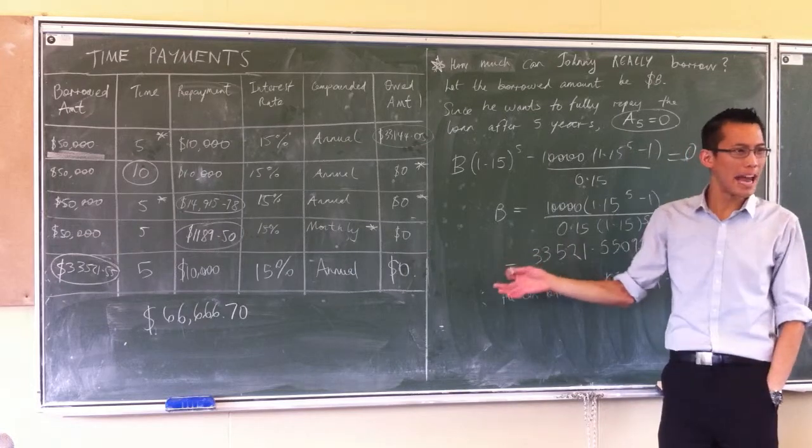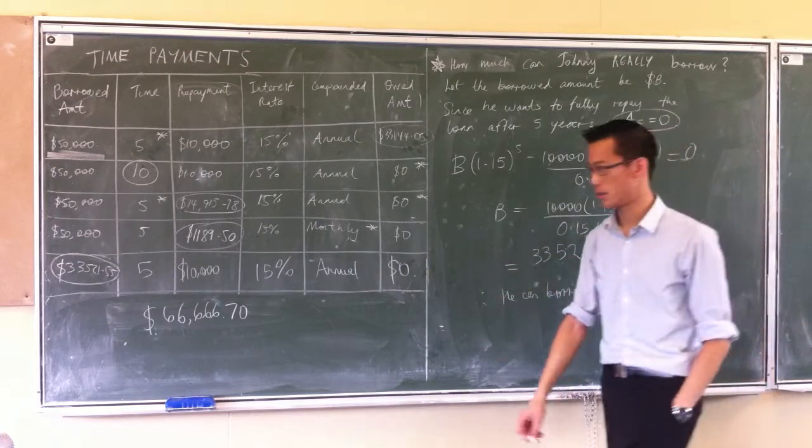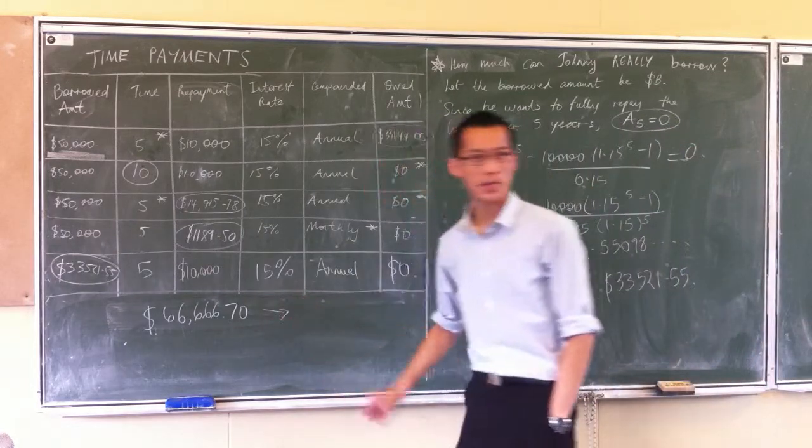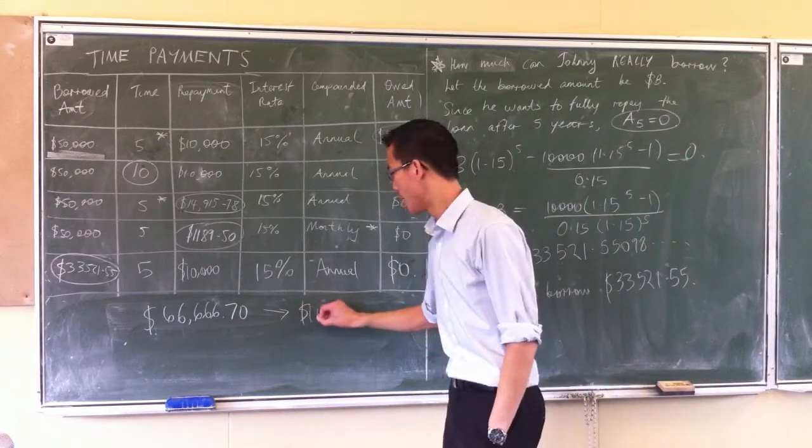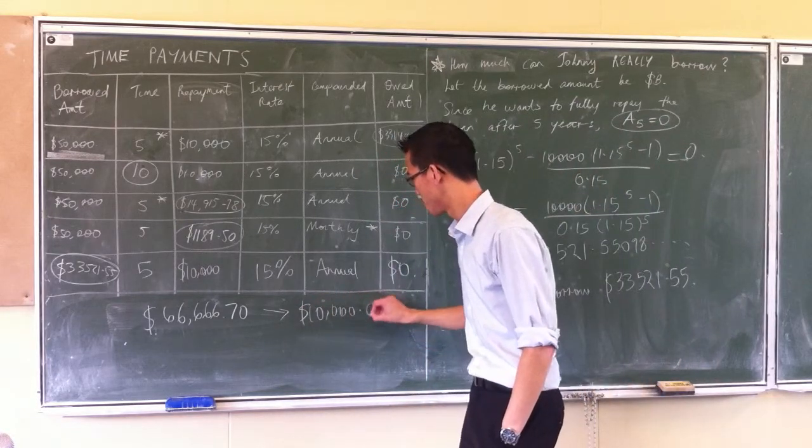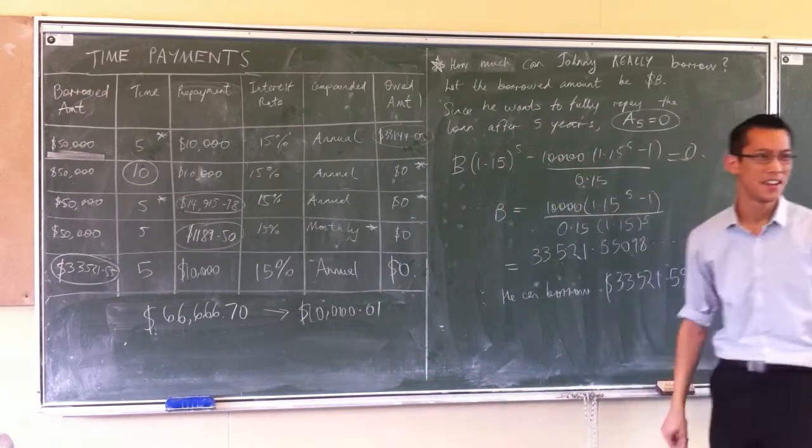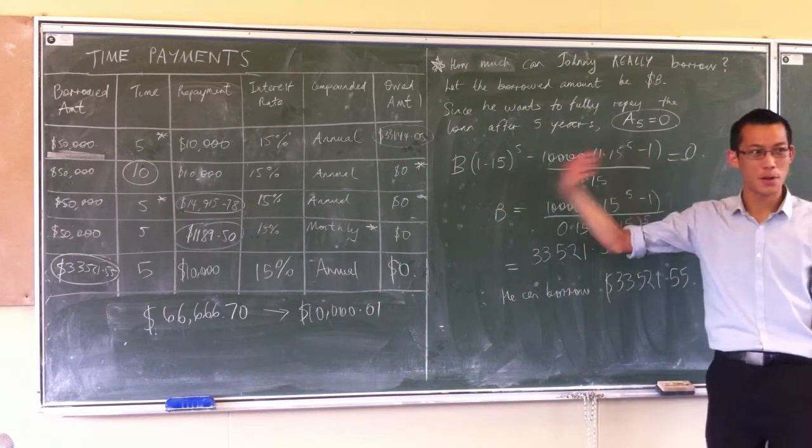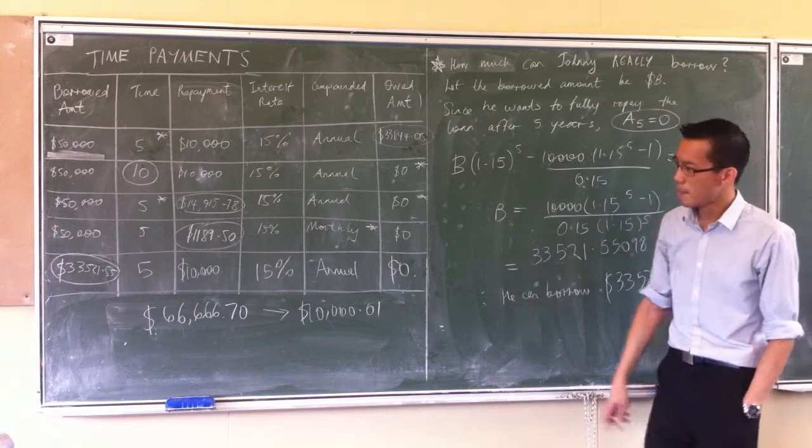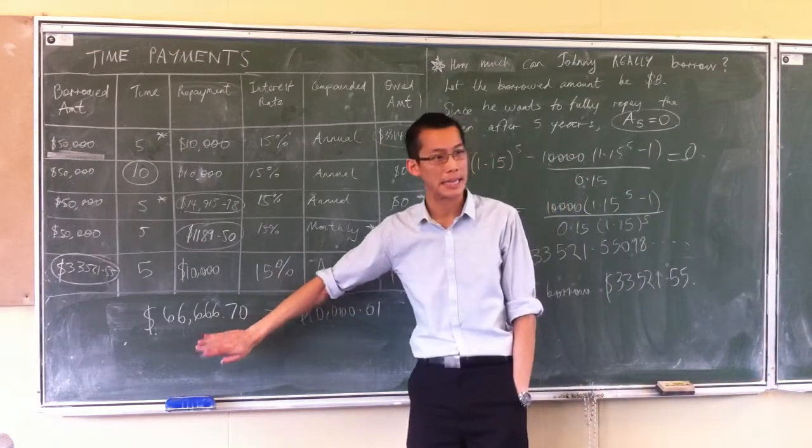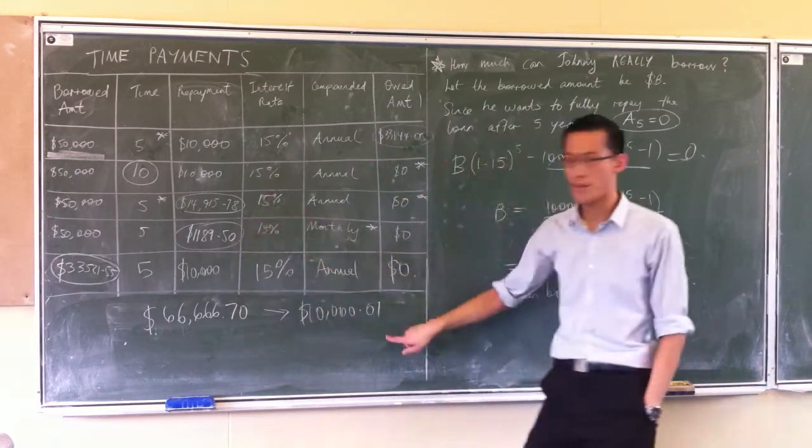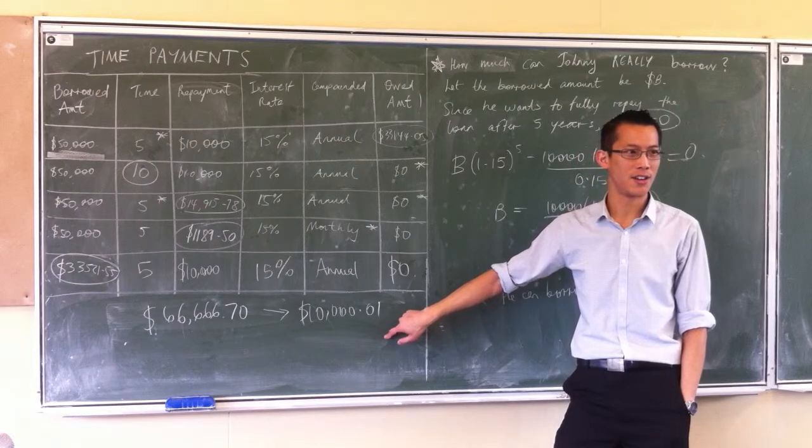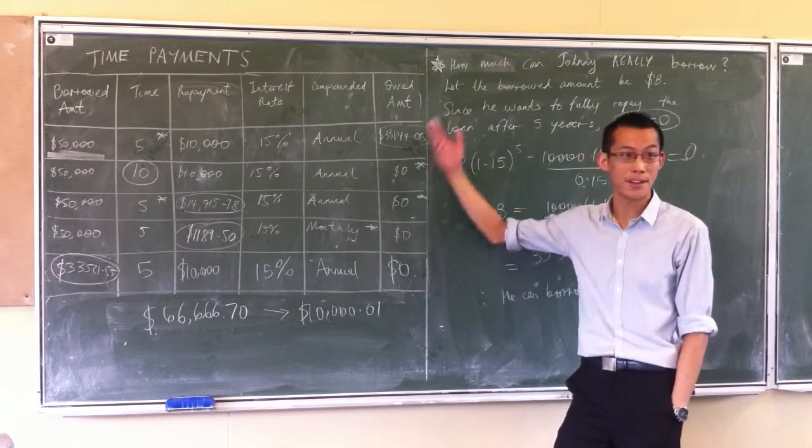If you work out what happens every year, 15% interest, right? The 15% interest turns out to be, after you round it, $10,000 and one cent. Right? So he makes his repayment of $10,000 every year, but because of how much he's borrowed at the beginning, his repayments never make any dent in the loan. In fact, the loan is just going to get bigger and bigger forever. Okay, so what's the moral of the story?